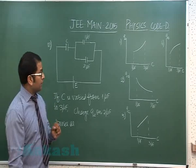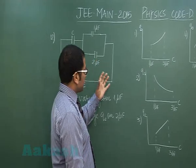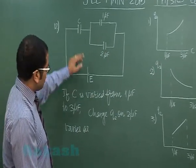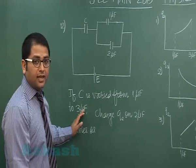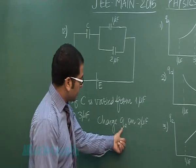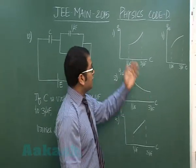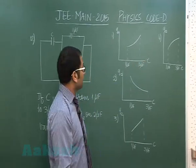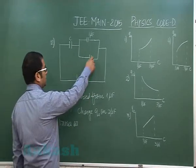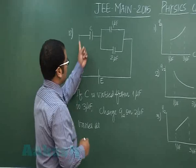Question number 12 is another beautiful setup, again related to capacitors and graphs. It says C is varied from 1 microfarad to 3 microfarad. Then how does the charge on 2 microfarad, which is denoted by q₂, vary? So we need to see the variation of q₂ with respect to C. First of all, let me try to calculate the charge on 2 microfarad as a function of C.